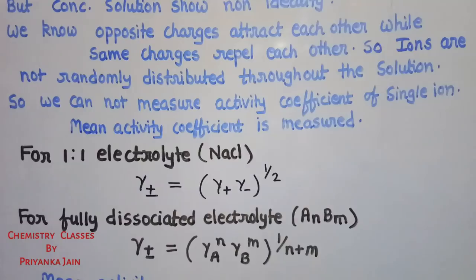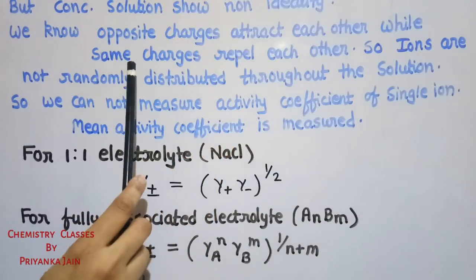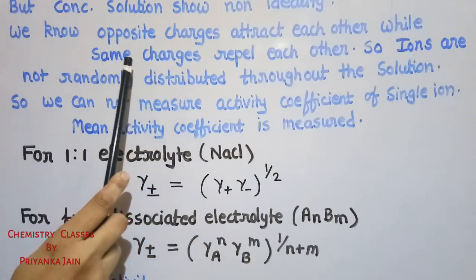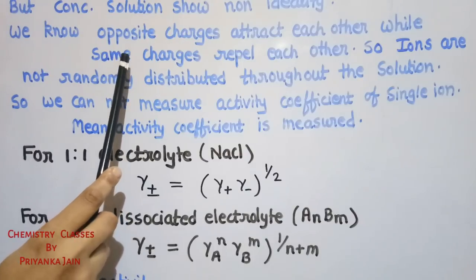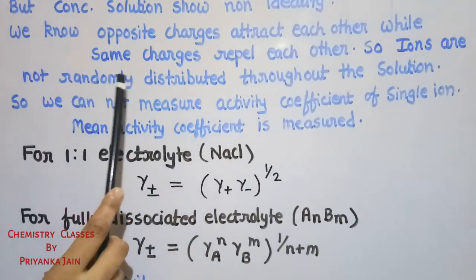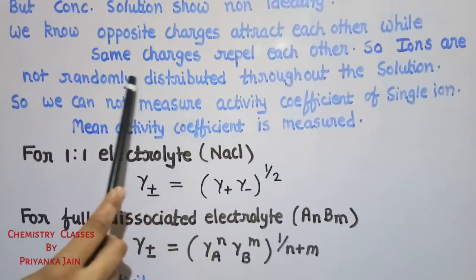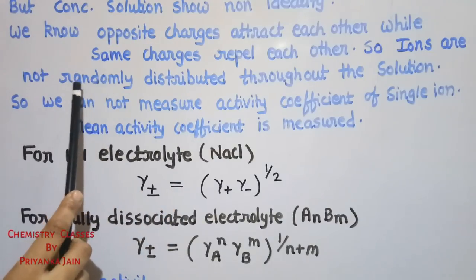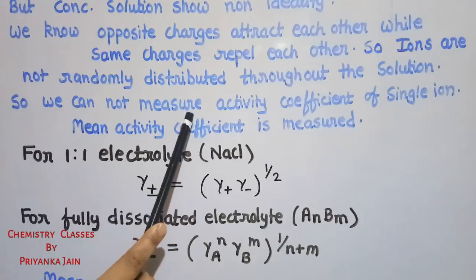In electrolytic solutions, strong electrolytes dissociate into cations and anions. Opposite charges attract each other while same charges repel. So cations tend to go near anions and anions tend to go near cations, meaning the ions are not randomly distributed throughout the solution as in ideal solutions.